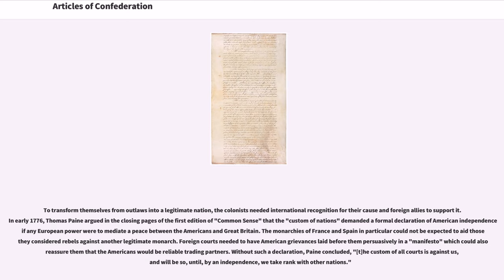The colonists needed international recognition for their cause and foreign allies to support it. In early 1776, Thomas Paine argued in the closing pages of the first edition of Common Sense that the custom of nations demanded a formal declaration of American independence if any European power were to mediate a peace between the Americans and Great Britain. The monarchies of France and Spain in particular could not be expected to aid those considered rebels against another legitimate monarch.